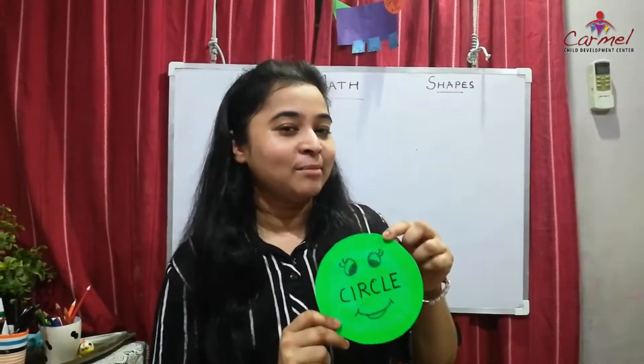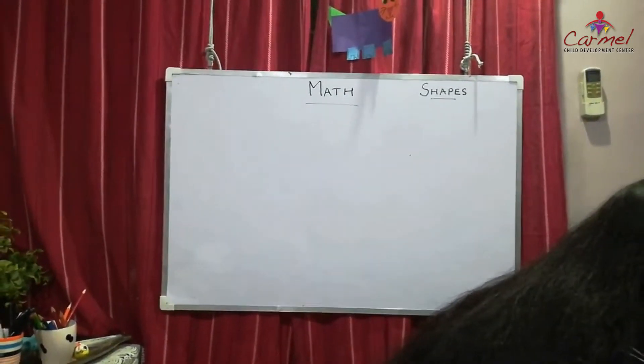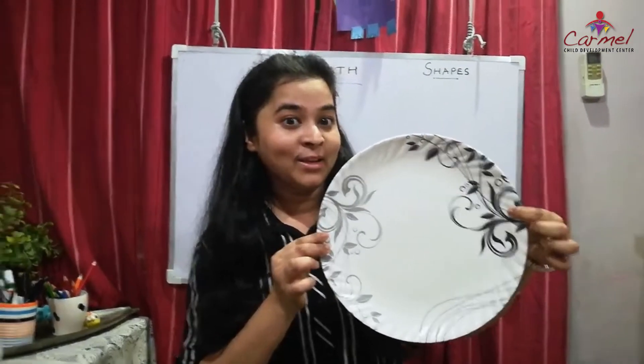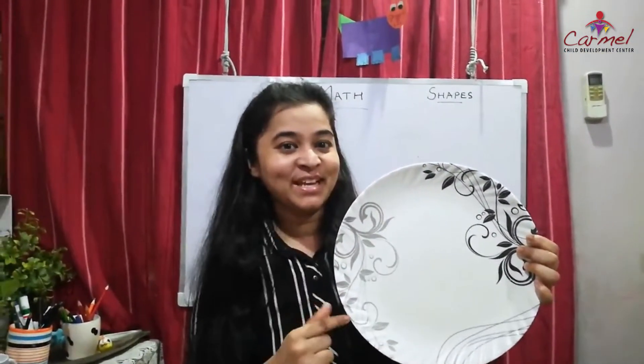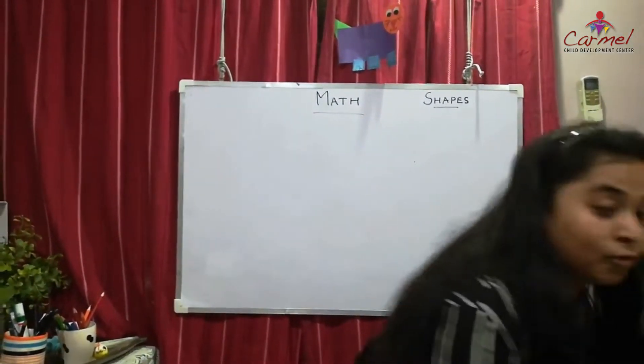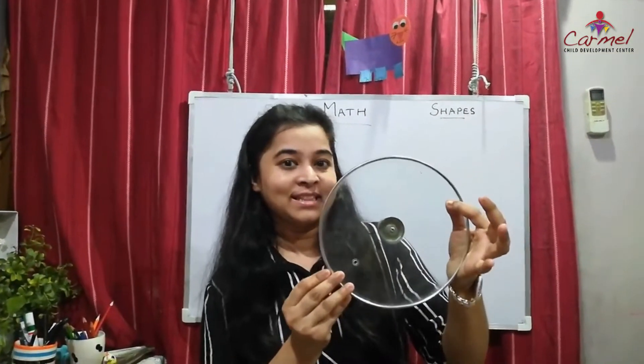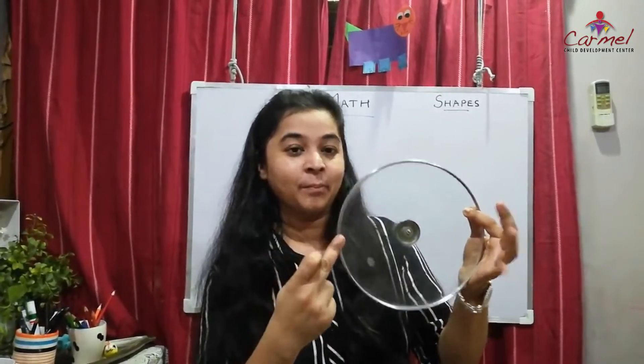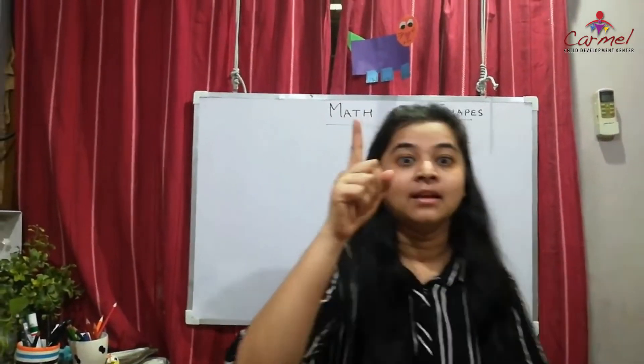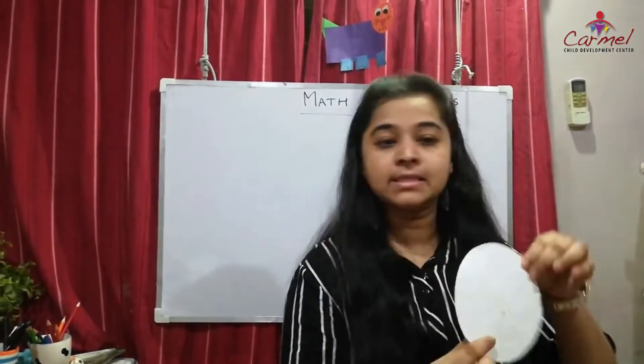See around you — is there any circle-shaped object? I think you have found one. Yes, the clock looks circle in shape, isn't it? Also the plate — the food plate also looks like a circle. The lid you use to cover food also looks circle in shape. And the fan — when it rotates, it looks like a circle. There are many circle shapes around us!